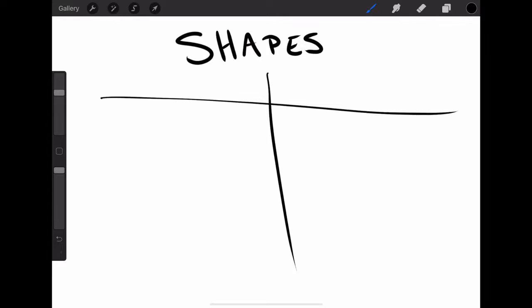All right, so today's lesson is all about shapes. Shapes come in two different categories. The first category is called geometric. That word geometric should remind you of geometry from math class.